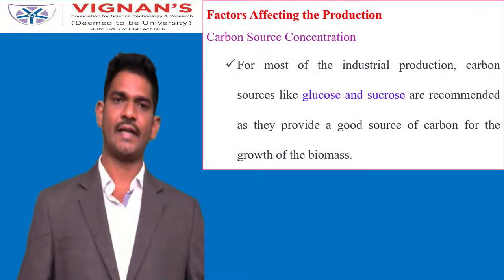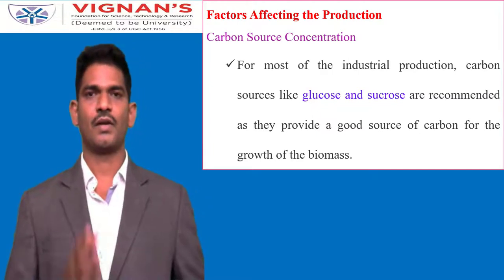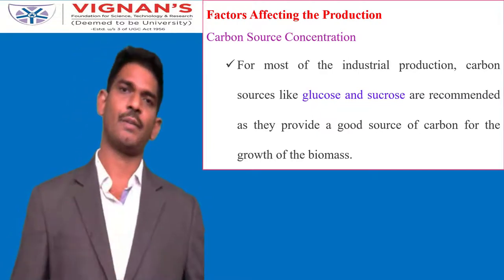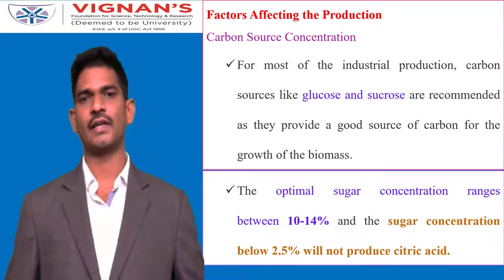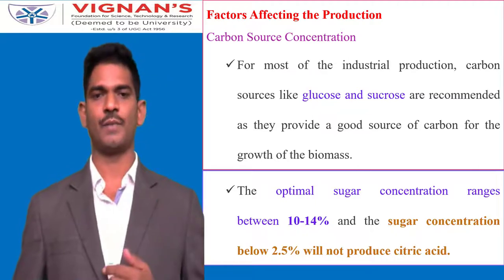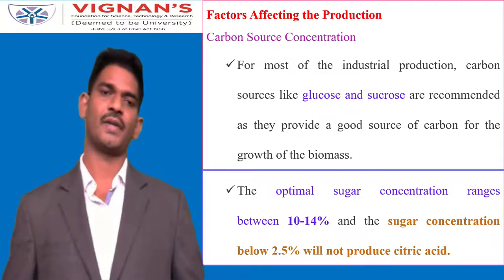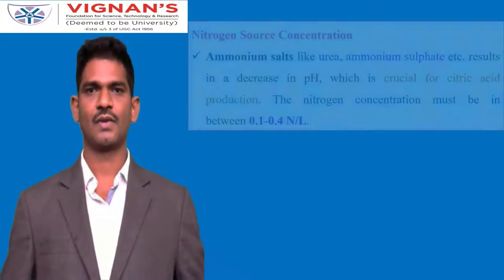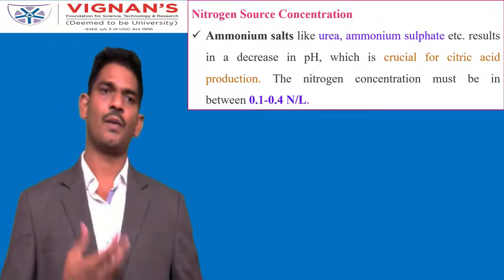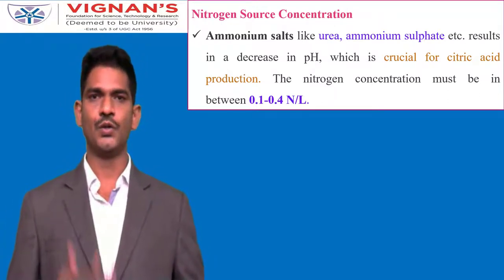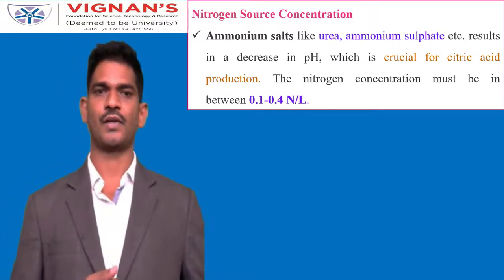Factors affecting production of citric acid include the carbon source. Glucose and sucrose are widely recommended carbon sources, with optimal sugar concentration of 10 to 14%. Sugar concentration below 2.5% will not produce any citric acid. Nitrogen salts such as ammonium salts including urea and ammonium sulphate can be used, as they decrease the pH, which is crucial for citric acid production.